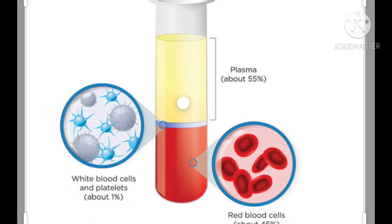Blood is made of blood plasma and blood cells. First, we will learn about plasma. Plasma is a yellowish liquid part of the blood. It is mainly made up of water. It helps to transport digested food and waste products, as they easily dissolve in water.